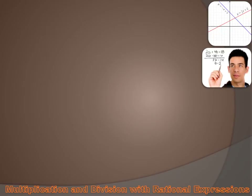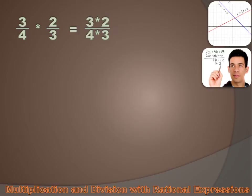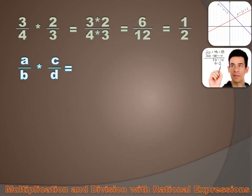Multiplying and dividing rational expressions is pretty easy — just like multiplying and dividing fractions. If I had to multiply three quarters times two thirds, it's just the two numerators times each other over the two denominators times each other. I may have to simplify my answer — six over 12 should be simplified to one half — but that's pretty simple. If I'm multiplying rational expressions with algebraic symbols, it's the same process: I multiply my two numerators and then my two denominators to get my answer.